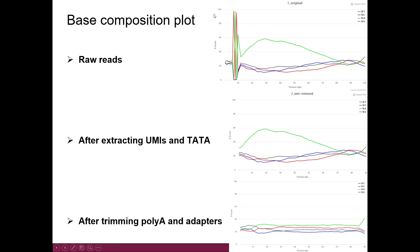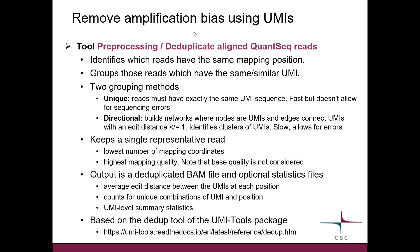Let's look at the base composition at these different steps. In raw reads, we have a very strong pattern: the TATA motif followed by the UMI. When we remove those, we get another pattern that still has a bump of A's. But once we do the trimming of poly-A and adapters, we end up with something rather equal.